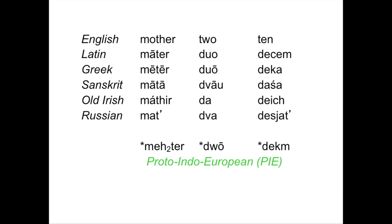This language was never written down — its speakers were completely illiterate. But by using phonetic knowledge and knowledge of how languages change, we can actually reconstruct how they pronounced these words. There's an h2 notation because there was more than one kind of 'h' in Proto-Indo-European. I've put asterisks in front of reconstructed words — not because I love asterisks, but to show these are reconstructed words never written down. That's the Proto-Indo-European language family, including most languages of Europe, languages of Iran, and languages of northern India.